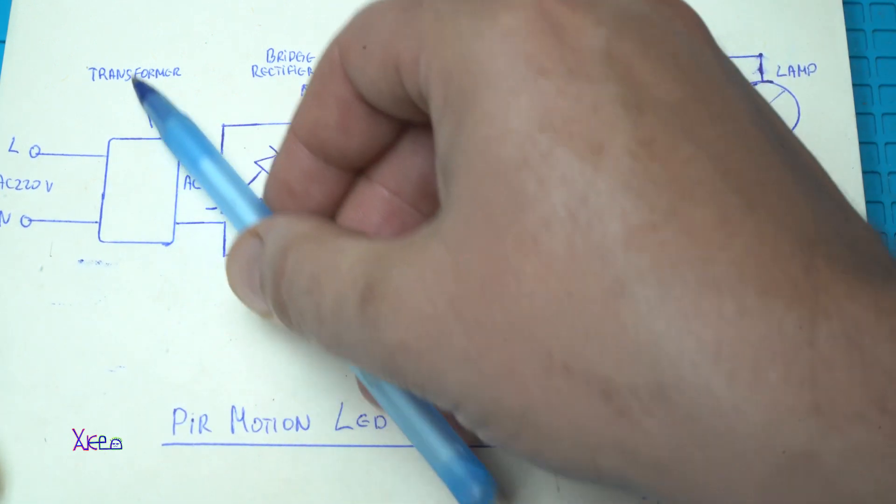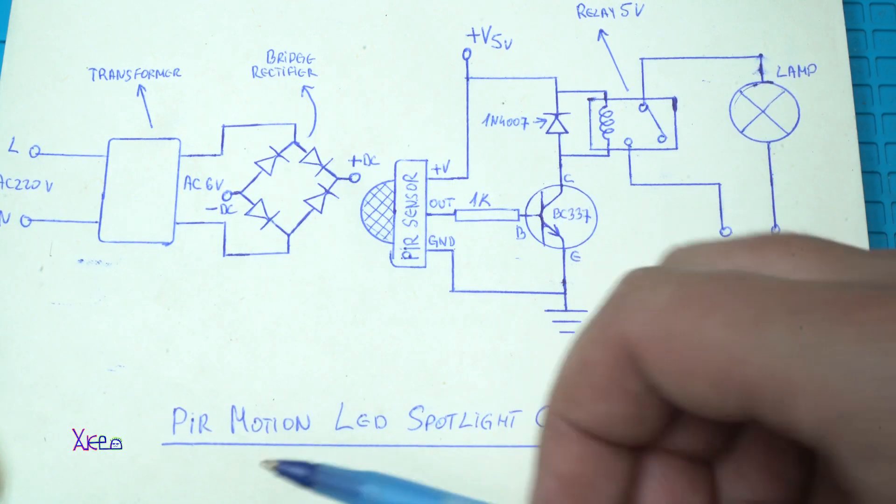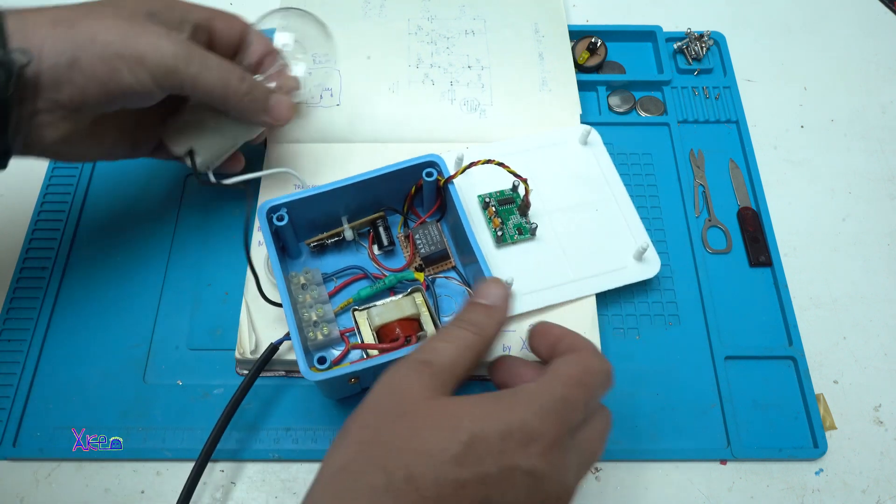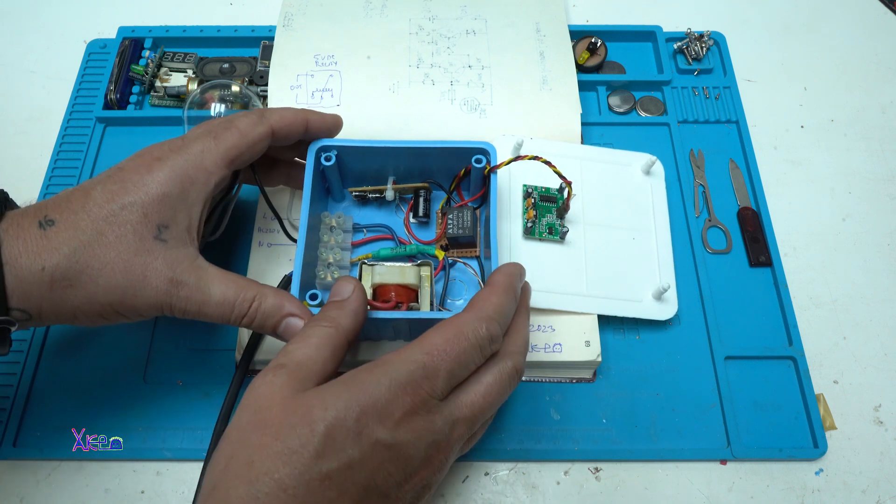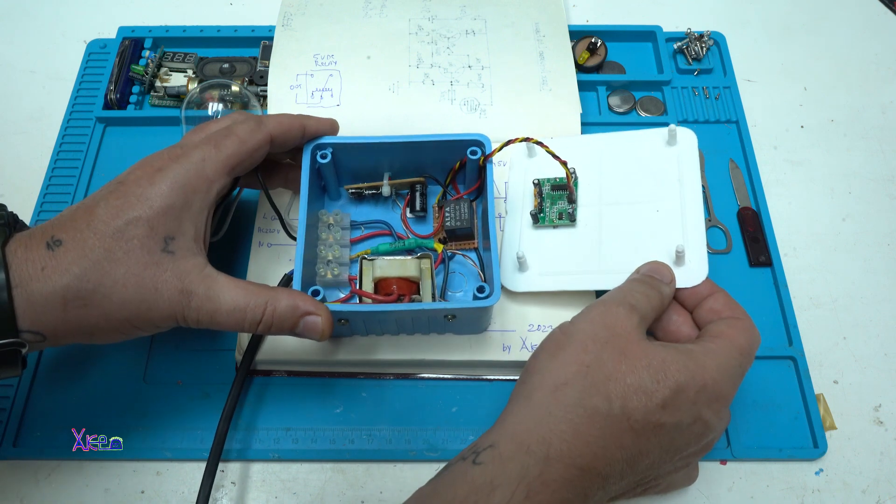On the left side we have the transformer and the bridge rectifier. I have built and made all the connections on this electric box and now I am going to explain how everything is connected and why.